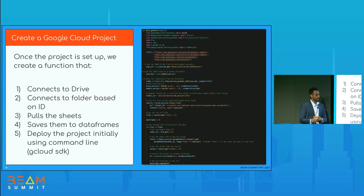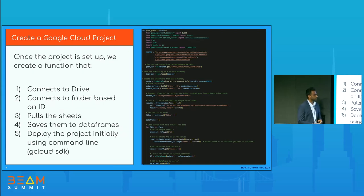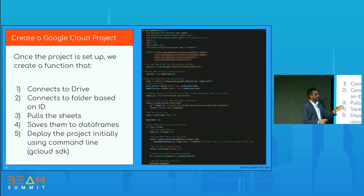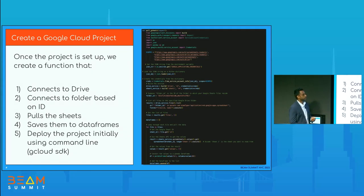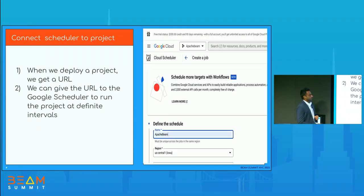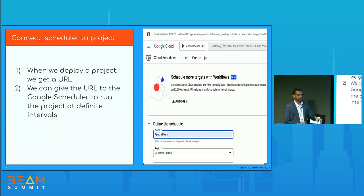After we get the files, we list them as data frames in a bigger list, and each data frame can be stored as a list of data frames. One important part is how we deploy this. When we deploy it into the Google Cloud profile, we get an HTTP URL that we can use for scheduling the Google Cloud Scheduler. This is how you basically schedule a Google Cloud Scheduler — the URL is generated once you deploy your Python project into Google Cloud, and you give it there to schedule the runs.